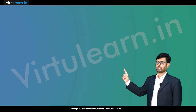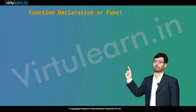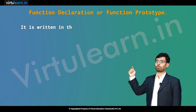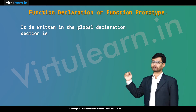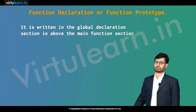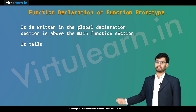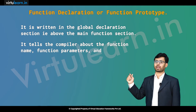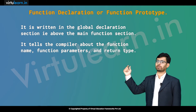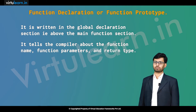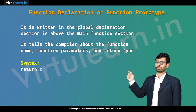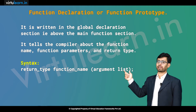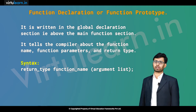Coming to the first one, function declaration or function prototype. It is written in the global declaration section, that is above the main function section. It tells the compiler about the function name, function parameters, and what is the return type we have used. The syntax for this is: return type, space, function name, and within the brackets we represent the argument list.